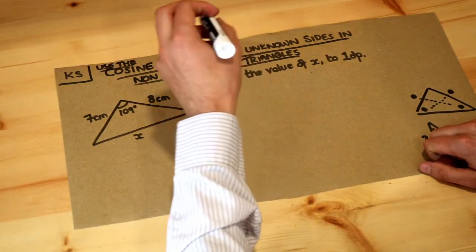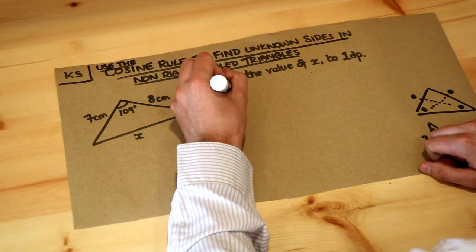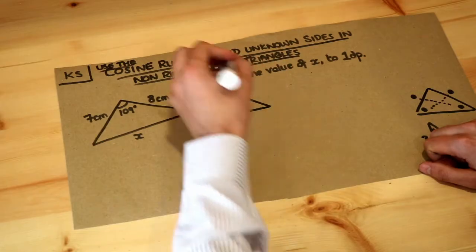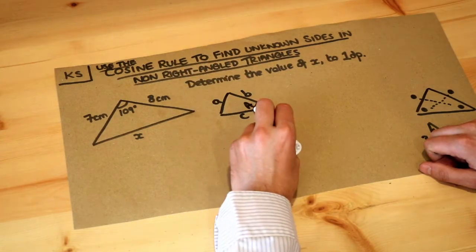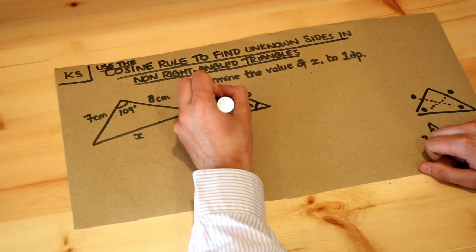Now let me just write out the cosine rule and then we'll use it. If you have three sides, little a, little b, little c, and you're involving the angle opposite that a, so these are paired together.